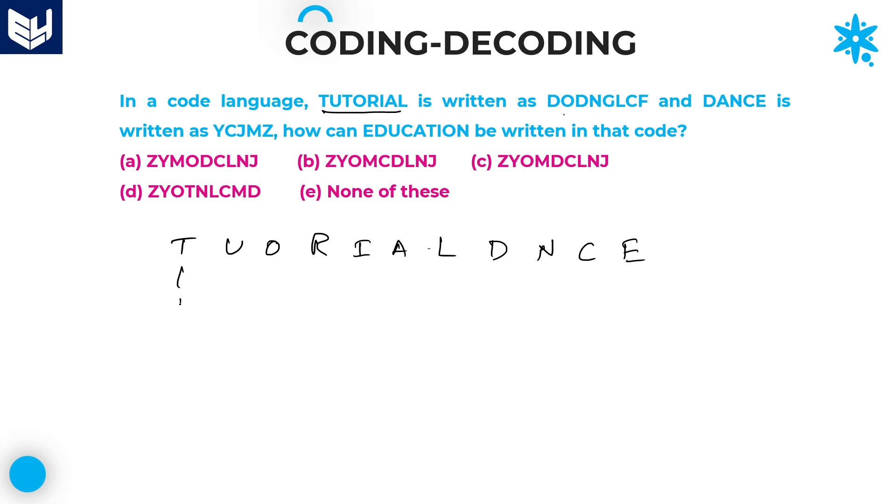First, write down each and every one. T is equal to D. U is equal to O. O is equal to N. R is equal to G. I is equal to L. A is equal to C. L is equal to F. And D is written as Y. A is already over, so I don't want to write again. N is equal to J. C is equal to M. And E is equal to Z.